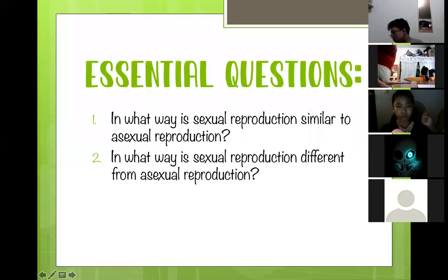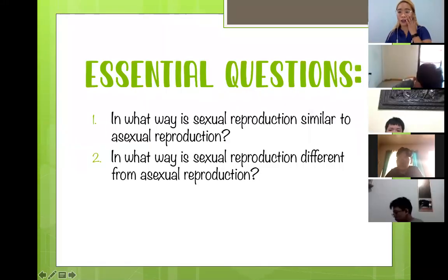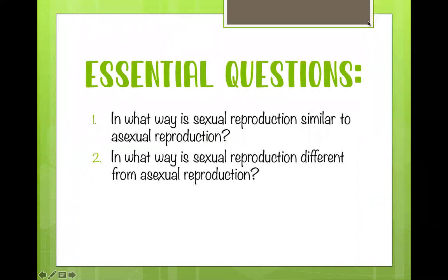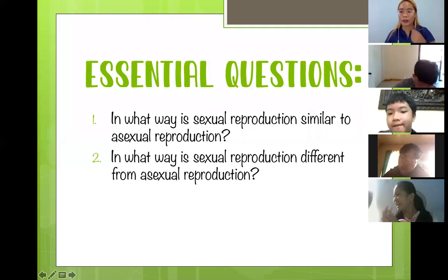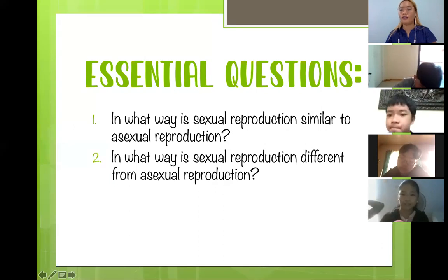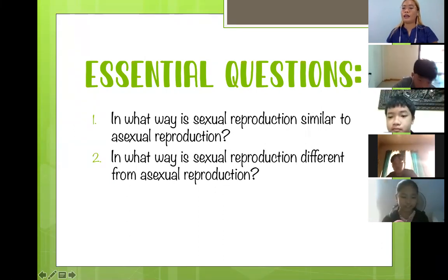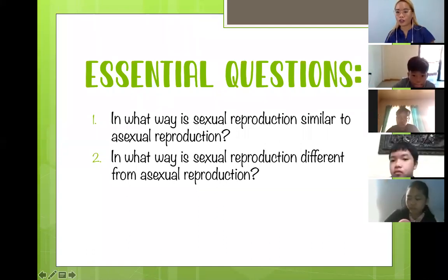At the end of our lesson, we have essential questions we must be able to answer. Number one: in what way is sexual reproduction similar to asexual reproduction? Although they are different, they do have something in common. And number two: in what way is sexual reproduction different from asexual reproduction? At the end of our class, these are the questions we must be able to answer.